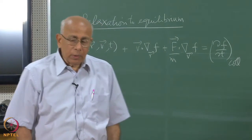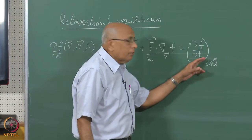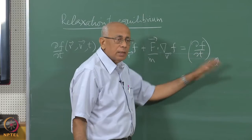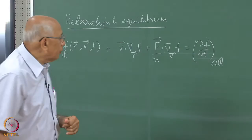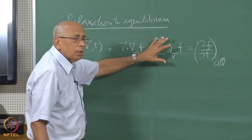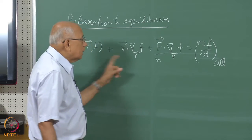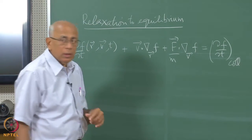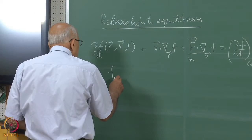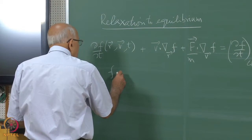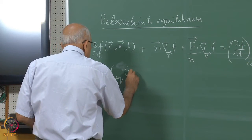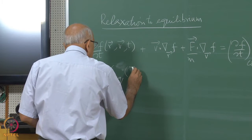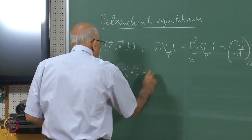Now of course it is horribly complicated, but even after you make a linear approximation it is still very messy. So let us make the simplest possible approximation. We have seen already that if you switched off the external force — there is no force at all — then this tends to an equilibrium distribution which I will call F equilibrium.